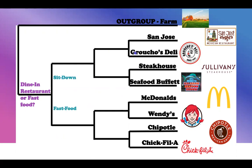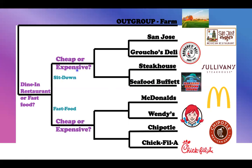The next place we see an internal node and cladogenesis happening: when I look at San Jose and Gracho's Deli, I could probably eat there for nine or ten dollars. But if I go to the steakhouse or seafood buffet, I'm spending at least twenty dollars. Same thing down here — if I go to McDonald's or Wendy's I could eat for six dollars or less, but if I go to Chipotle or Chick-fil-A I'm going to spend nine or ten dollars. So those are grouped by how expensive they are: cheap or expensive.